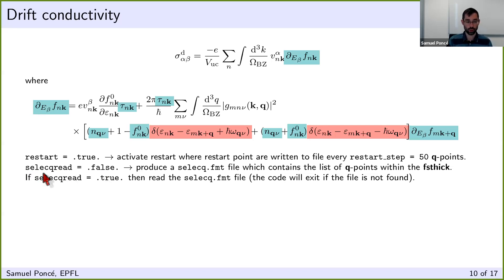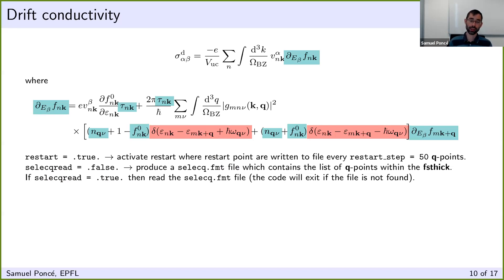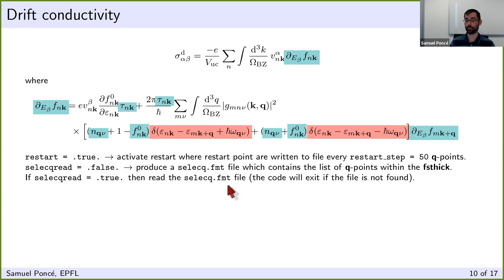Another input is select_q_read, which writes the list of q-points within the fsthick window to a file called selecq.fmt. On very dense grids, determining which q-points fall within the window can take time, so you can set this to false to produce the file on the first run, then set it to true on restarts to read from the file directly. The code will crash if you set it to true but the file doesn't exist.